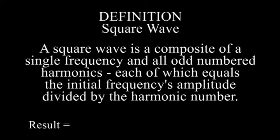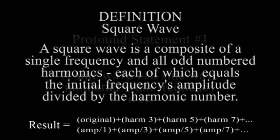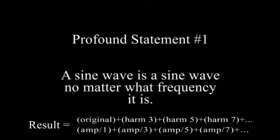Simply stated, a square wave is a composite of a single frequency and all odd-numbered harmonics, each of which equals the initial frequency's amplitude divided by the harmonic number. It doesn't matter what frequency we pick—the formula applies to audio and RF alike.